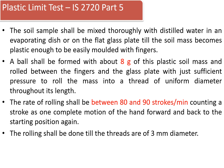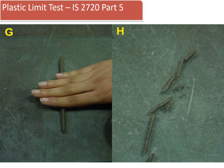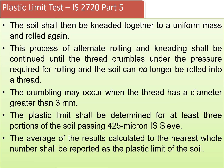Rolling shall continue until the threads are 3 millimeters in diameter as shown in the photograph. The soil shall then be kneaded together to a uniform mass and rolled again. This process of alternate rolling and kneading shall be continued until the thread crumbles under the pressure required for rolling and the soil can no longer be rolled into a thread. The crumbling may occur when the thread has a diameter greater than 3 millimeters. The plastic limit shall be determined for at least 3 portions of soil passing a 425-micron IS sieve, and the average result reported as the plastic limit.